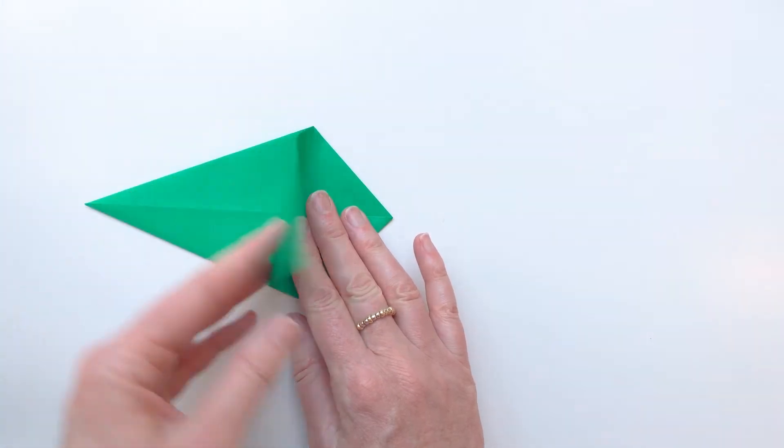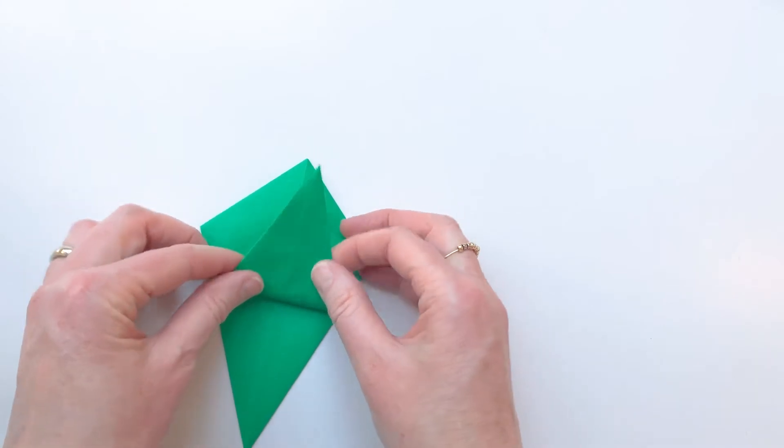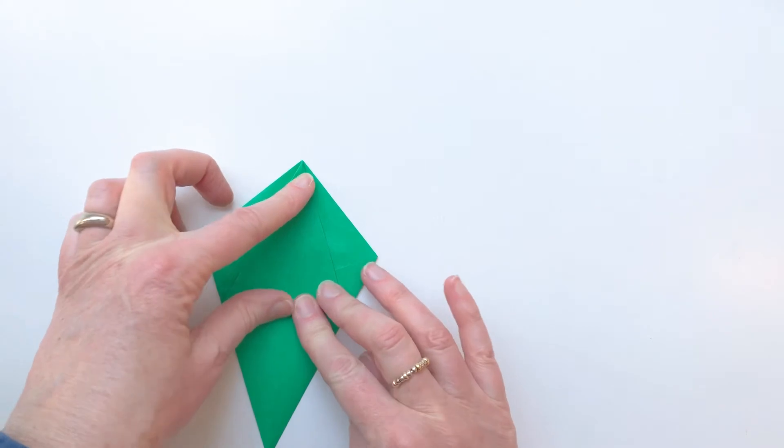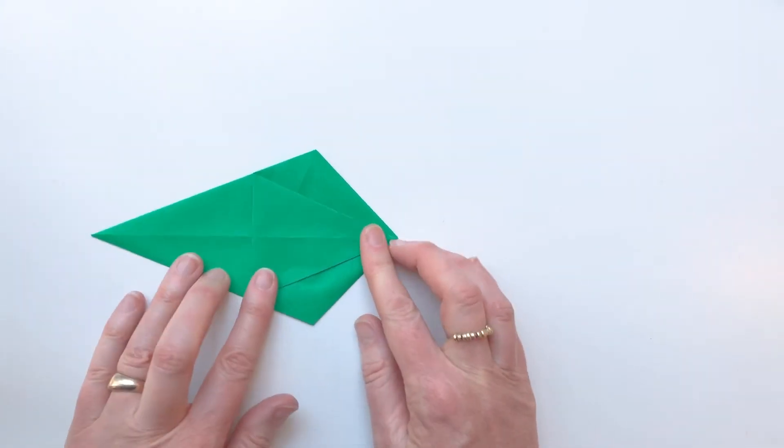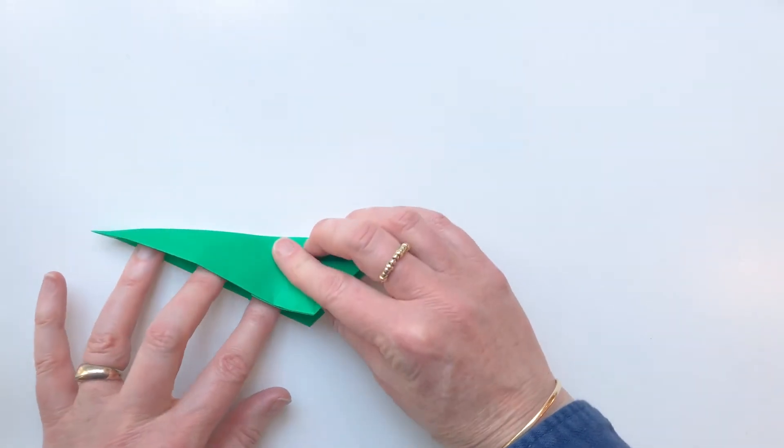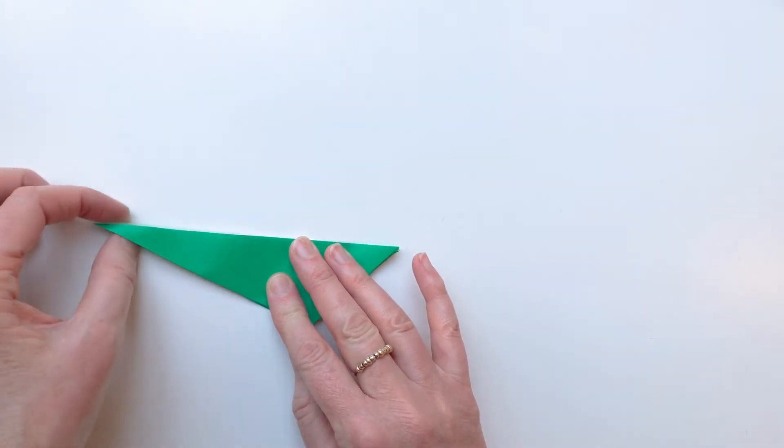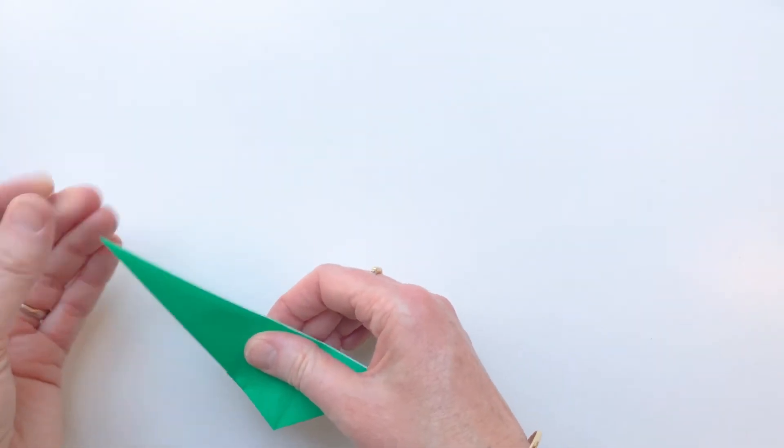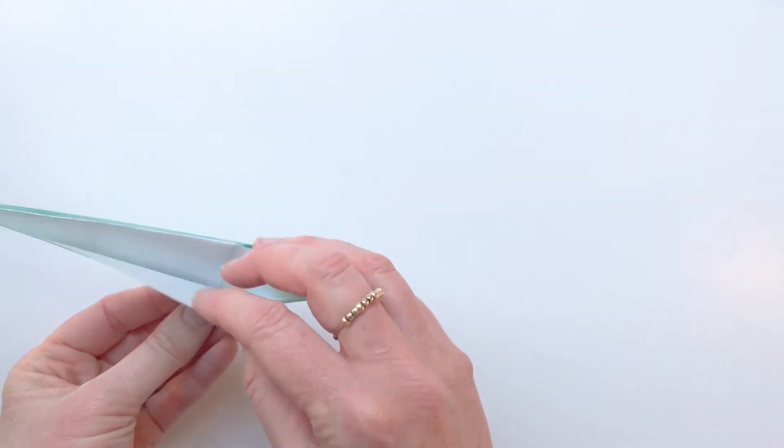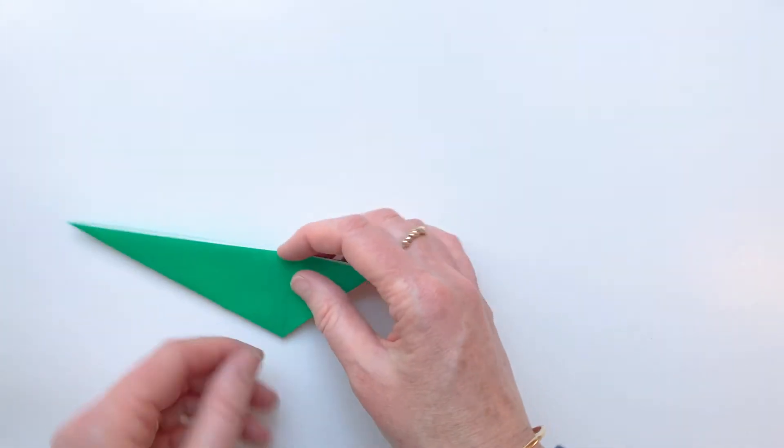Then you take one of these flaps and you bring this point to this point. Like so. So you end up with something like that. And then you just fold this top bit over. So you're folding it in half. Like that. So you've got sort of the cut edges are up here. So you can see already that's where you're going to put the Easter eggs.